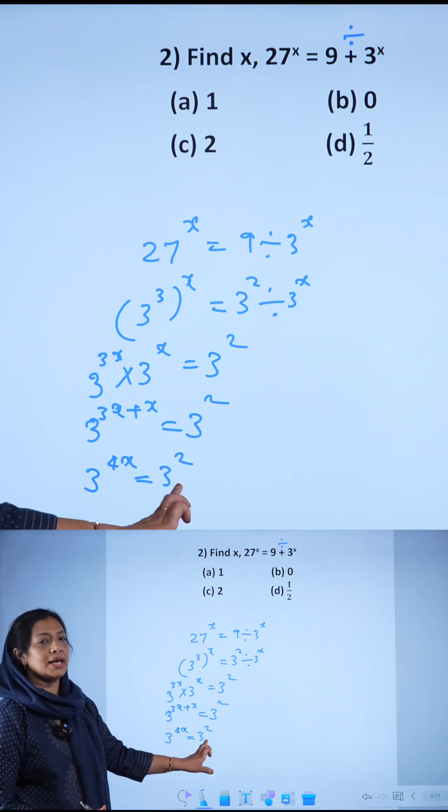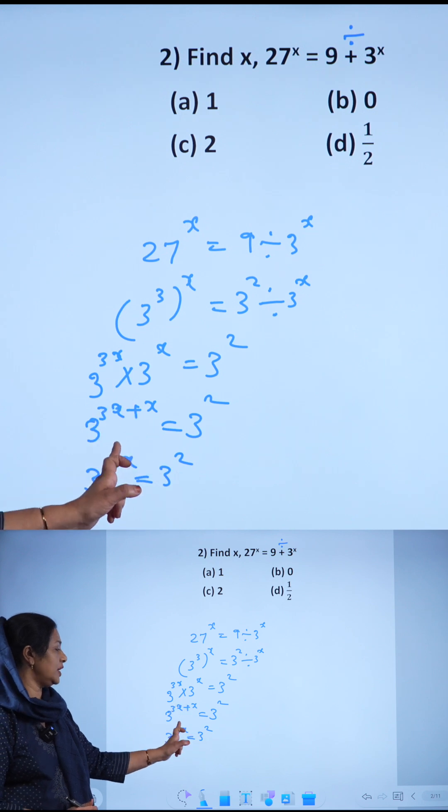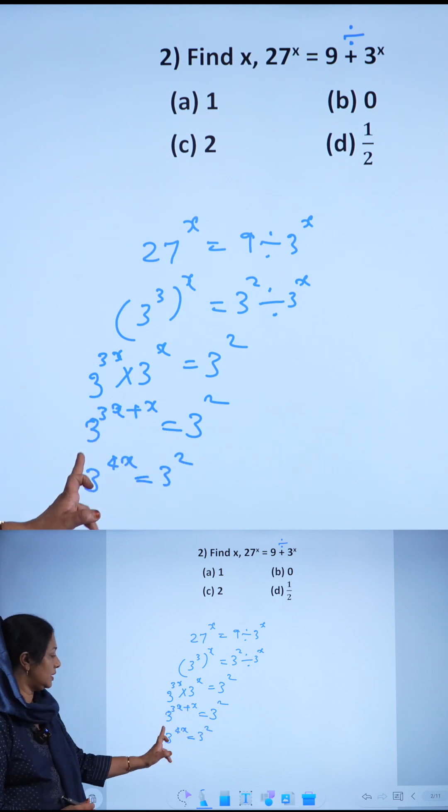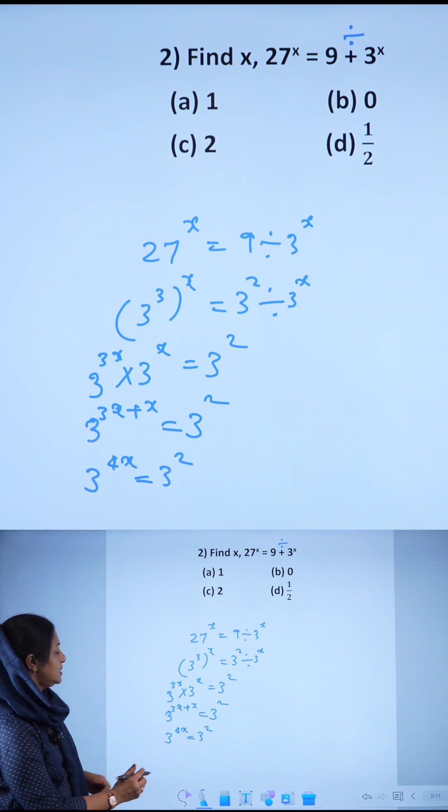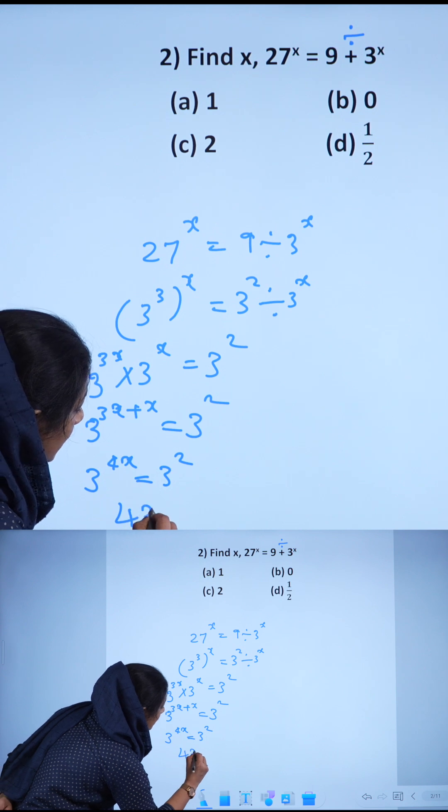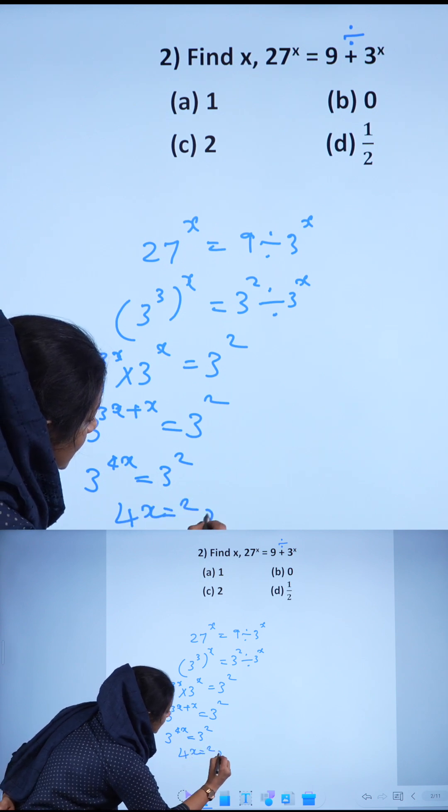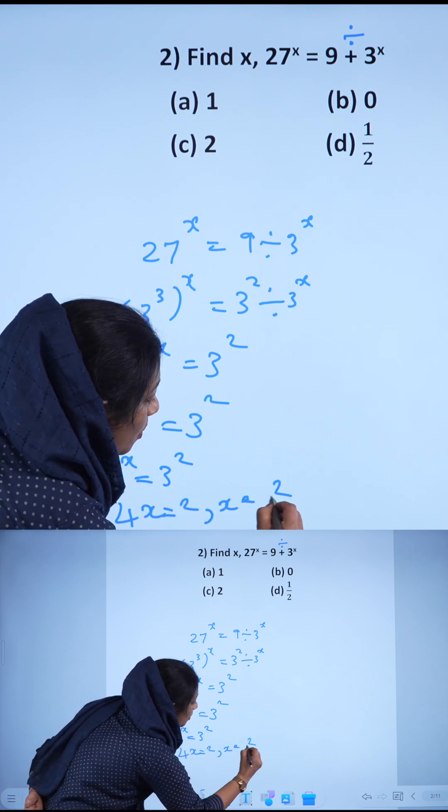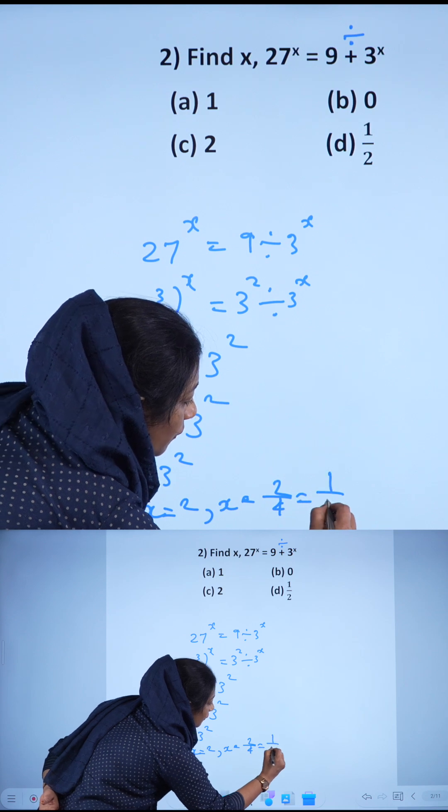If the bases are equal, the exponents are also equal. So 4x equals 2, which means x equals 2 by 4, which equals 1 by 2.